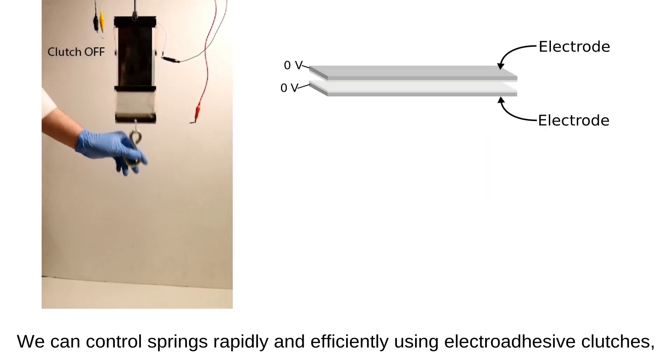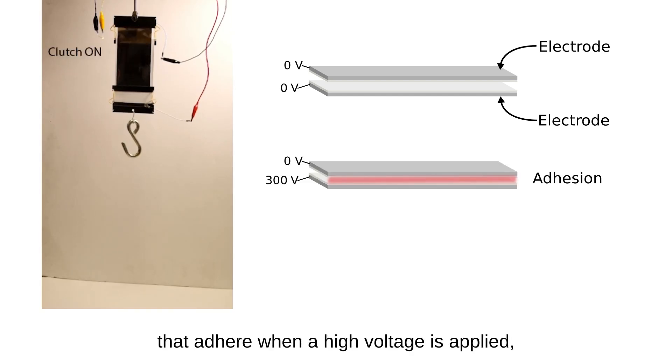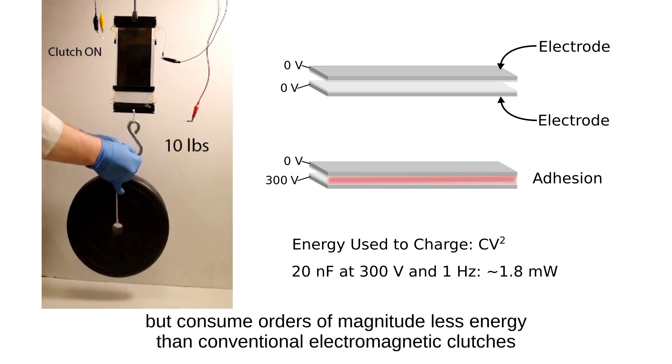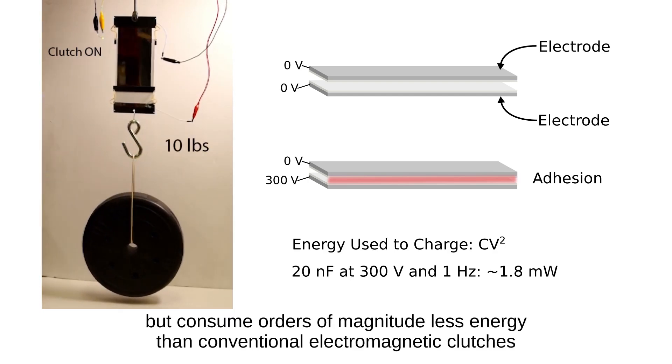We can control springs rapidly and efficiently using electro-adhesive clutches that adhere when a high voltage is applied, but consume orders of magnitude less energy than conventional electromagnetic clutches.